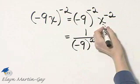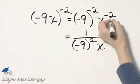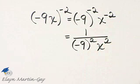And the same thing here. I'll take this x, move it to the denominator, and the exponent becomes positive 2. It affects the exponent only.